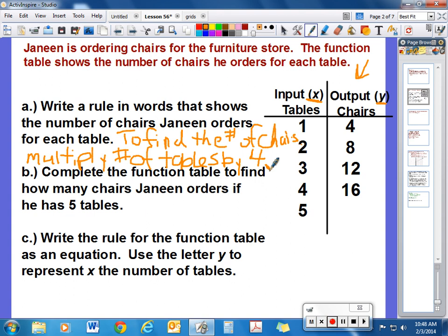Part b tells us to complete the function table to find how many chairs Janine orders if he has five tables. Well, we take the number of tables, five times four, and that means we would need twenty chairs.